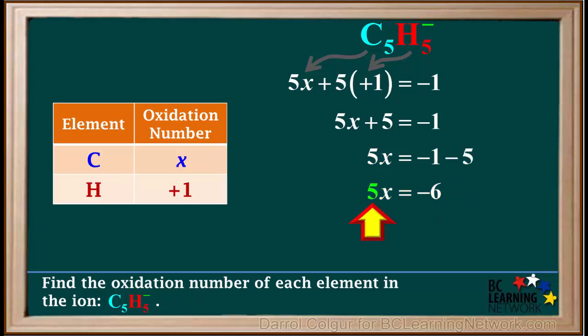Dividing both sides by five gives us X equals negative six-fifths, or as a mixed number, negative one and one-fifth.